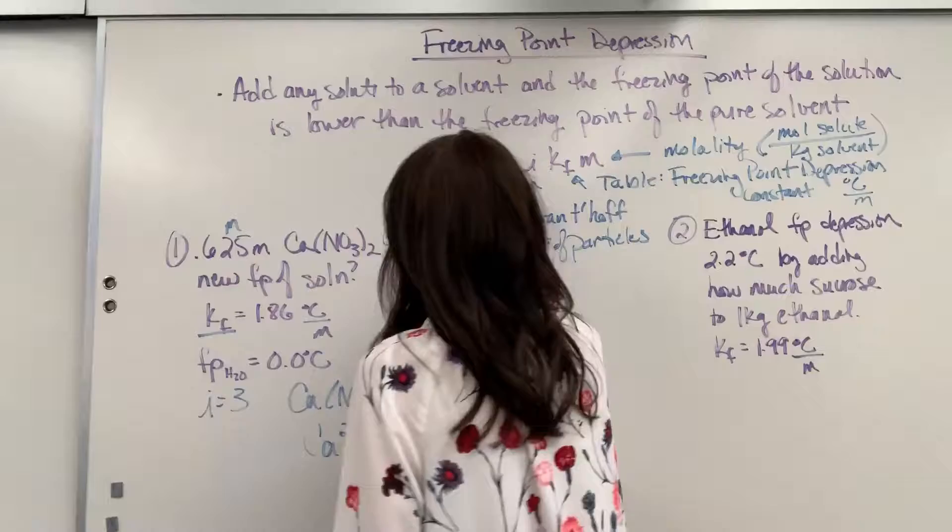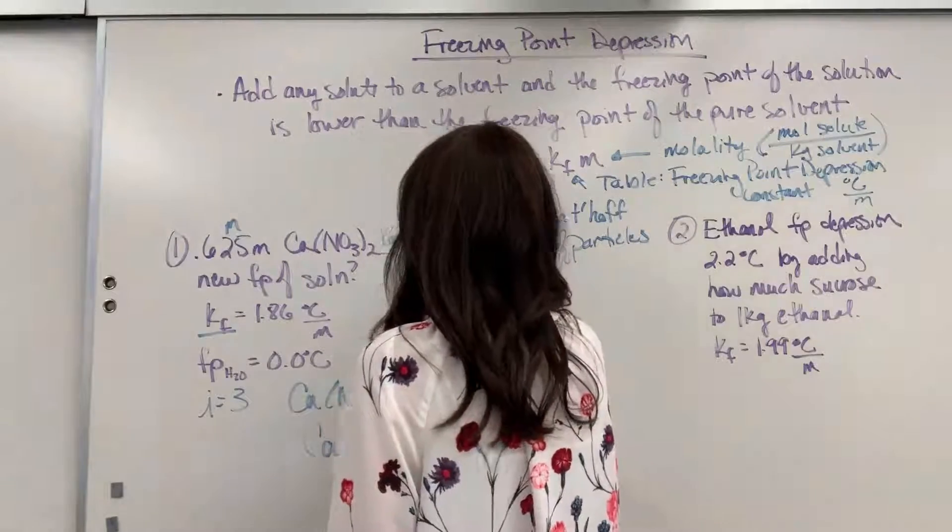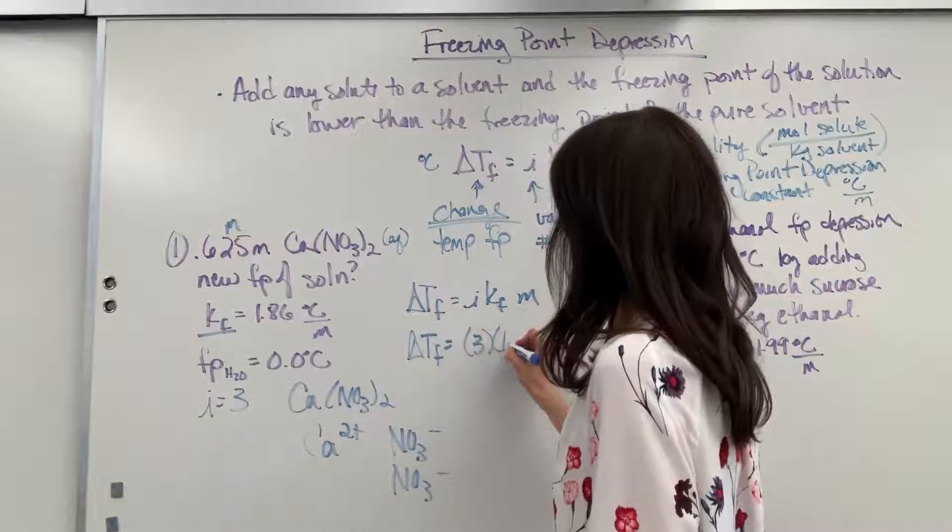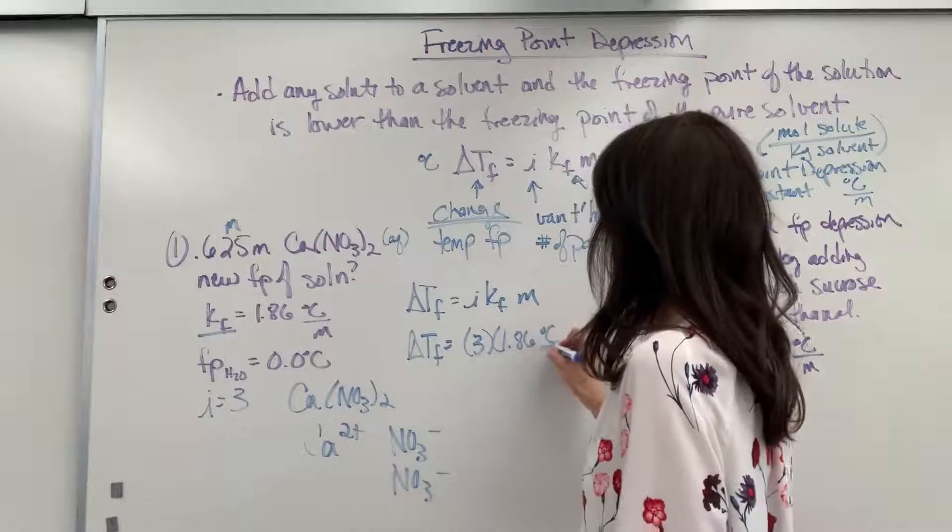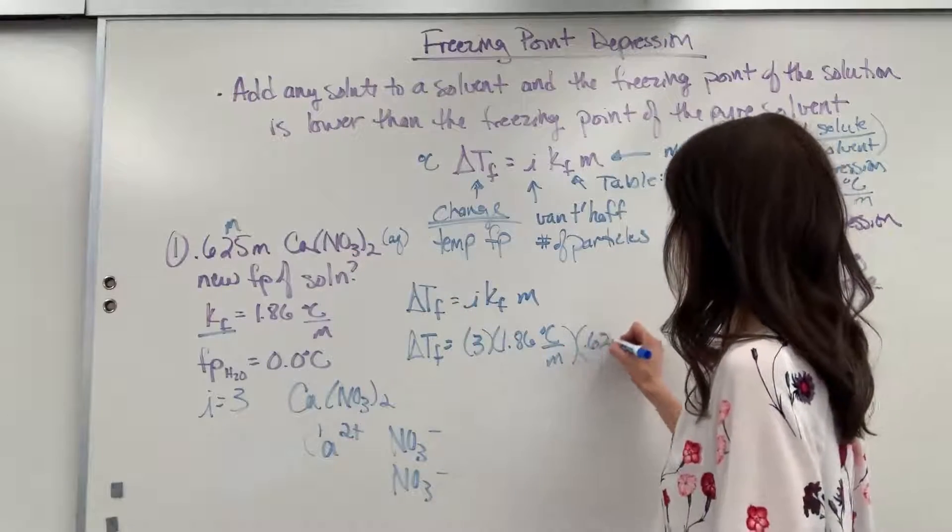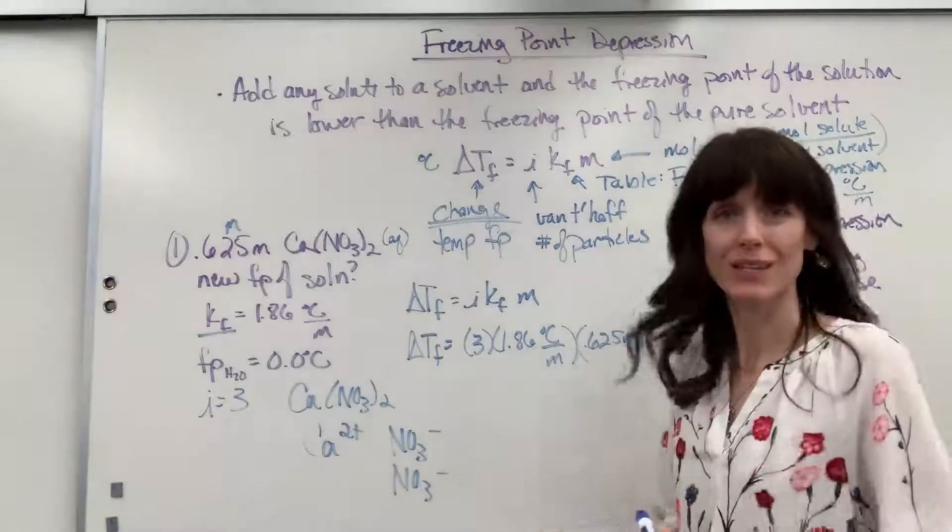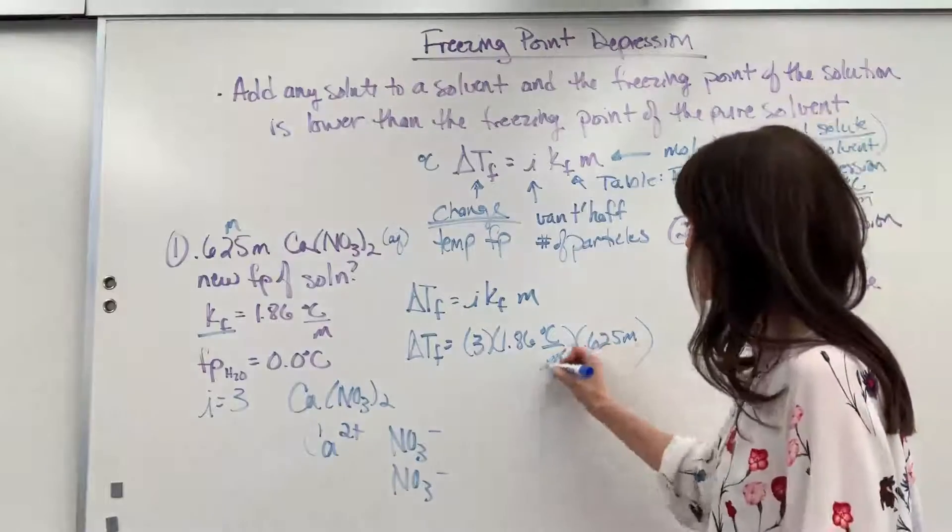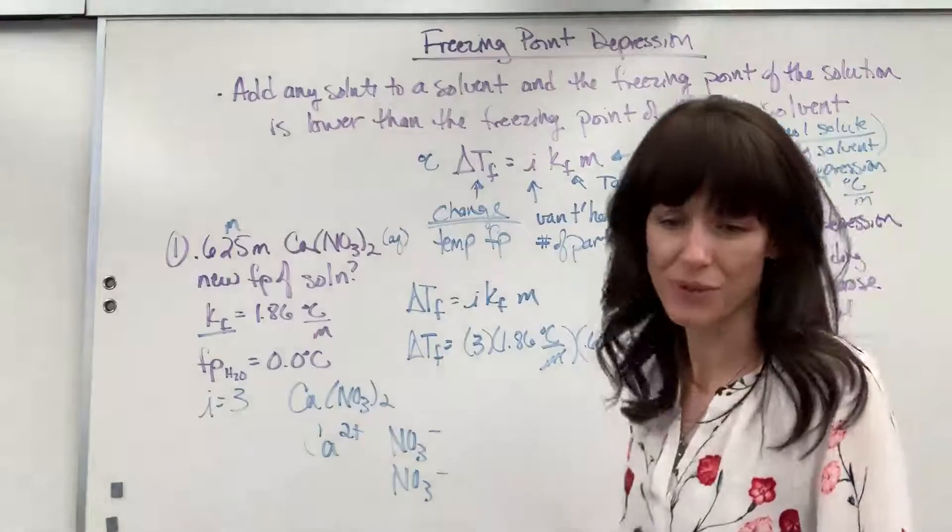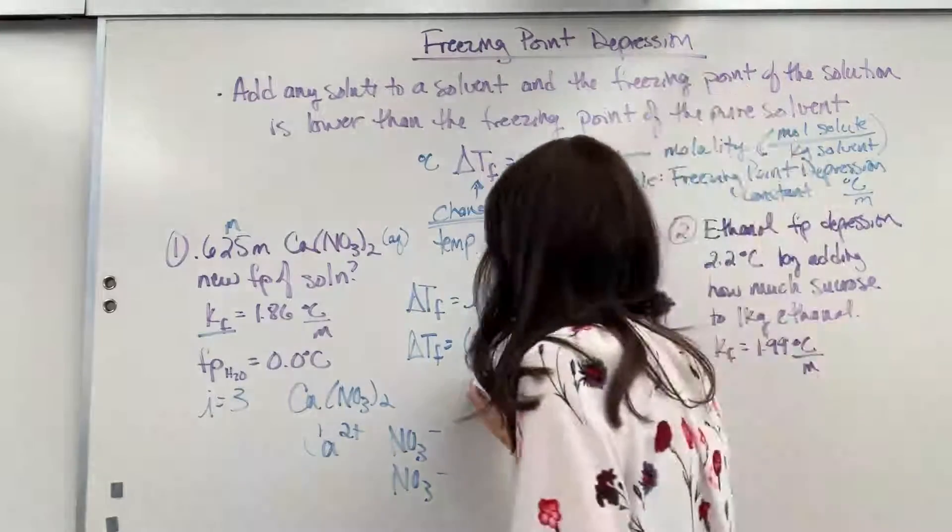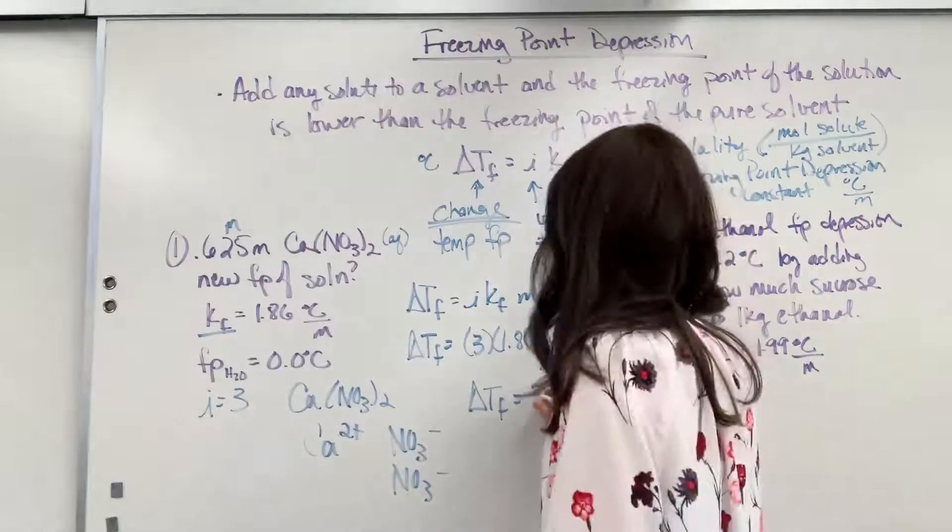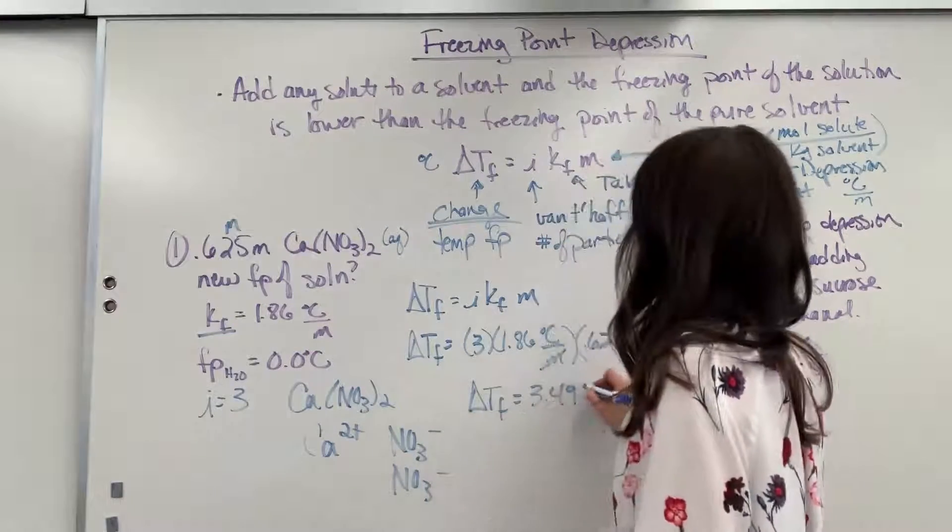So change of freezing point is three particles times 1.86 degrees C divided by molal times the molality 0.625 molal. Look at the units. When we multiply, molal cancels and we'll be left with degrees C. So when we multiply this through, we get a change in temperature of 3.49. And my unit is degrees C.